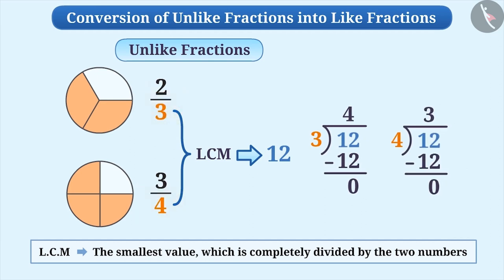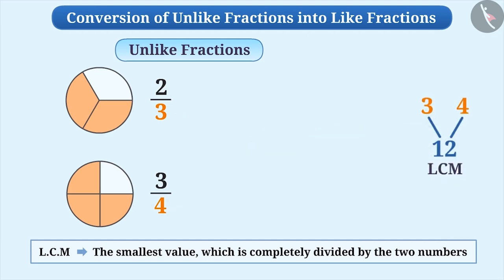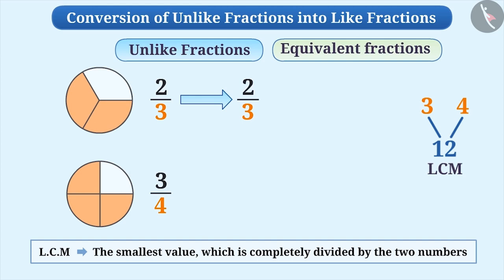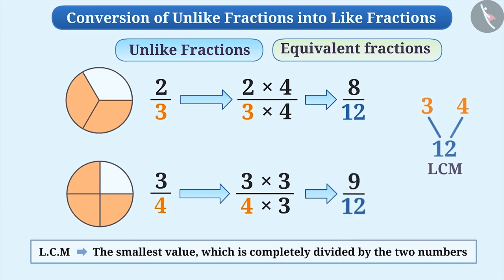Here, the LCM of denominators 3 and 4 is 12. We now find the equivalent fractions of both the fractions whose denominator will be the LCM. For this, we multiply the numerator and denominator of 2 by 3 by 4 and the numerator and denominator of 3 by 4 by 3. Thus, the equivalent fraction of 2 by 3 is 8 by 12 and 3 by 4 is 9 by 12.